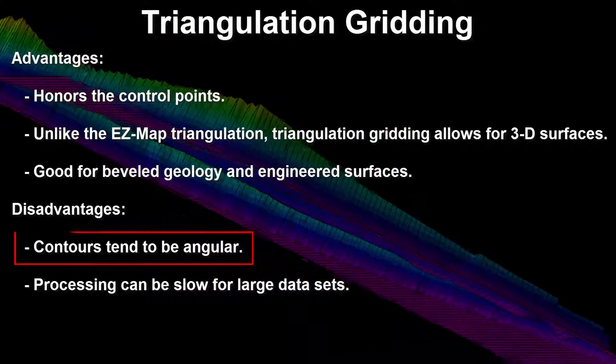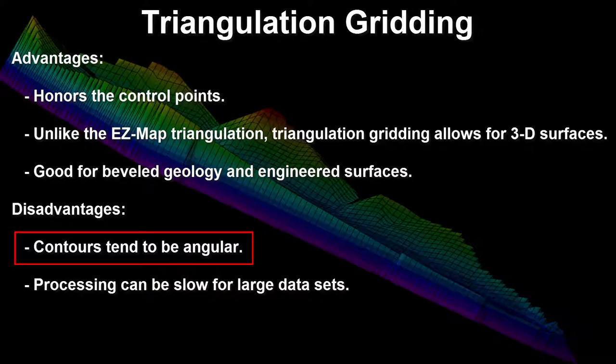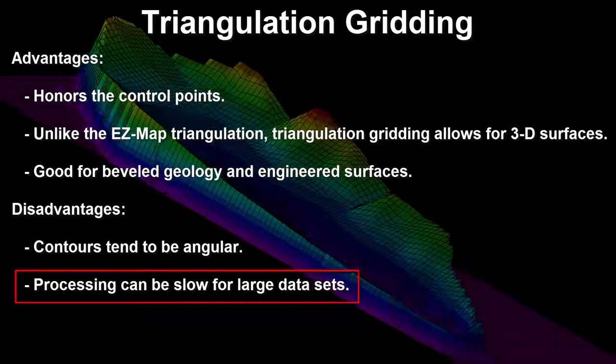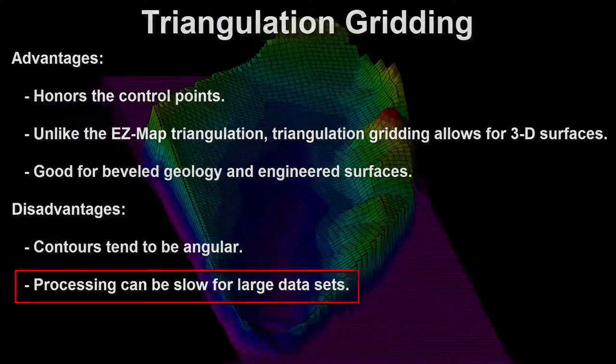Disadvantages: Triangulation contours tend to be very angular and triangulation gridding processing can be slow for large data sets.